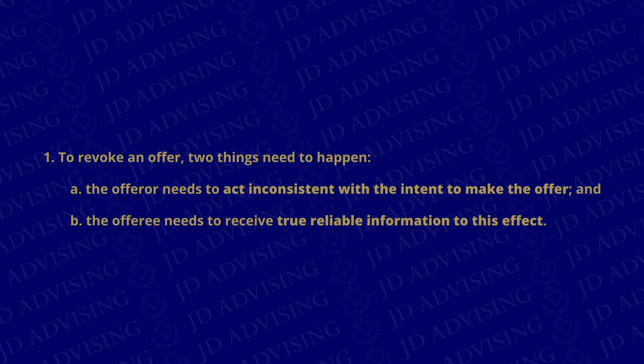What are some ways that you could effectively revoke your offer? The first way is rather straightforward: the offeror can simply tell the offeree that he's revoking his offer. Another way is if the offeree hears true, reliable information to the effect of revocation, or if he sees the offeror doing something that's otherwise inconsistent with his intent to make an offer.